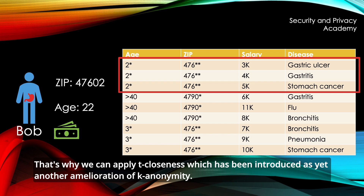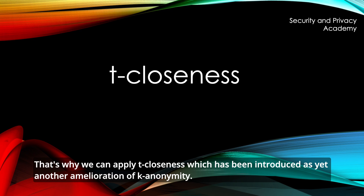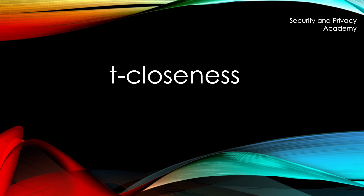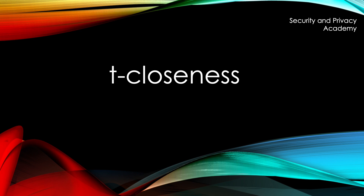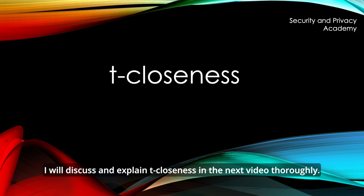That's why we can apply T-closeness, which has been introduced as yet another amelioration of K-anonymity. The concepts on how to calculate the distances between distributions of sensitive values is what you need when you apply T-closeness, and is out of scope for this video. However, I will discuss and explain T-closeness in the next video thoroughly.